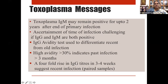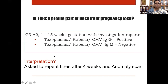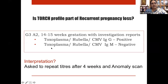Key messages for toxoplasmosis: IgM may remain positive for up to two years after primary infection. Assessment of timing of infection is very challenging when both IgG and IgM are positive. High avidity confirms past infection of more than three months; low avidity indicates recent infection. Rising IgG titers by four-fold in four weeks still suggests acute infection even if IgM is negative.